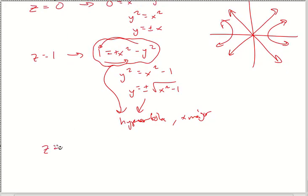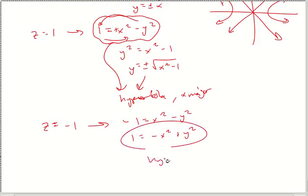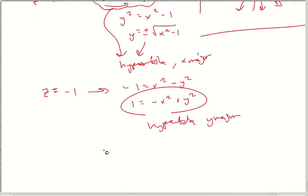For z equals negative 1: changing all the signs gives negative x squared plus y squared equals 1, which is still a hyperbola but now it's a y-major. Y-major hyperbolas open along the y-axis. So your contour map has two 45-degree lines at z = 0, x-major hyperbolas for positive z values, and y-major hyperbolas for negative z values. That's your answer for the contour map — pick that one.